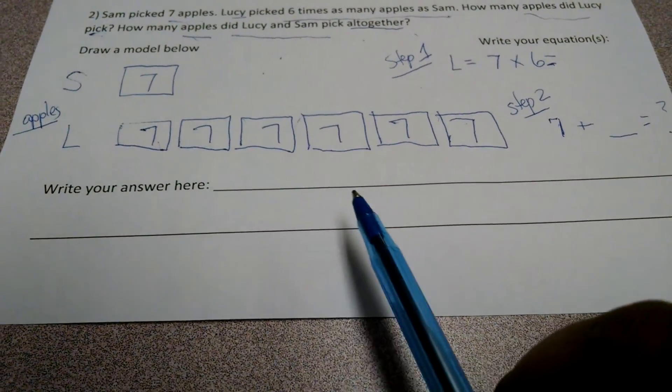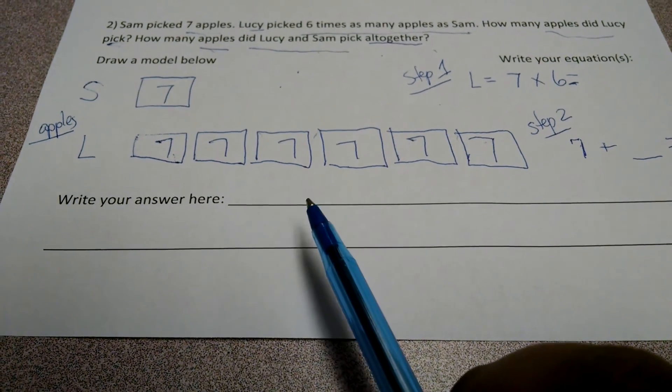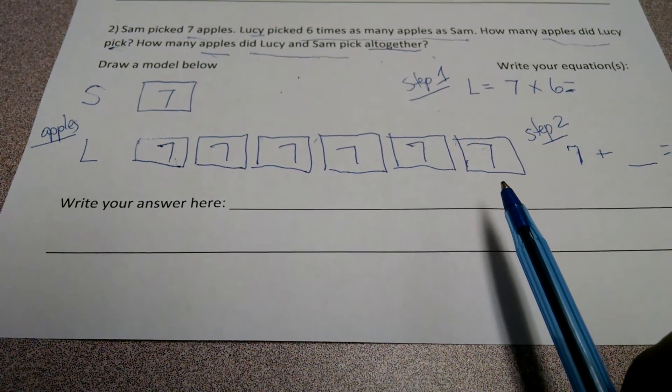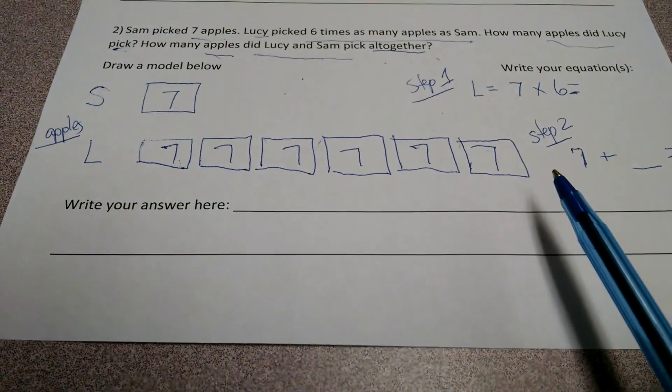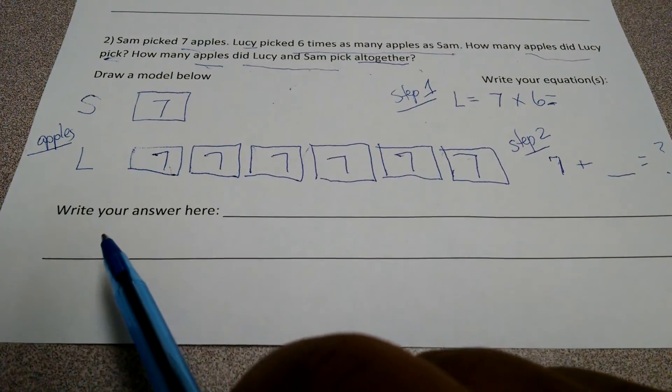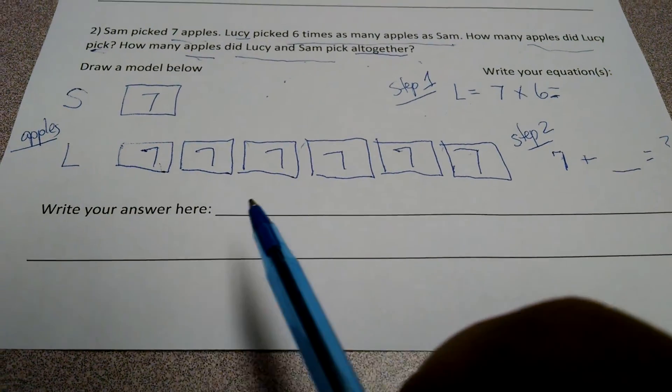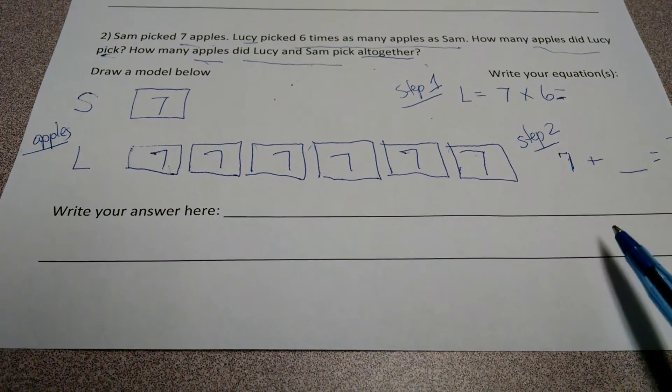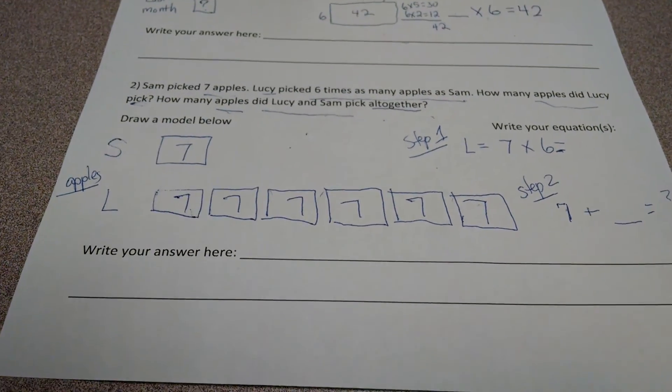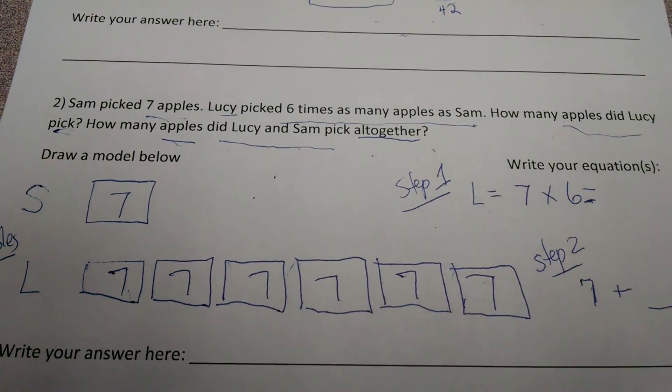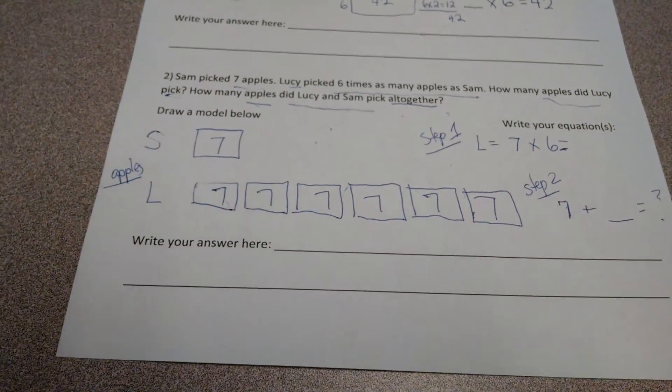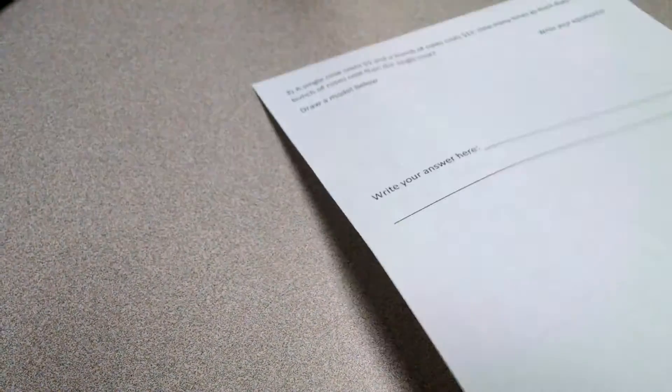So, when I write my answers here, I have to do... I have to have two answers here. So, I have to say, Lucy picked blank many apples. And then my second answer would be, Lucy and Sam picked blank many apples all together. So, I didn't fill everything out because, obviously, this will be Thursday's night's homework. So, I kind of set you up. And there's one more problem on the back.